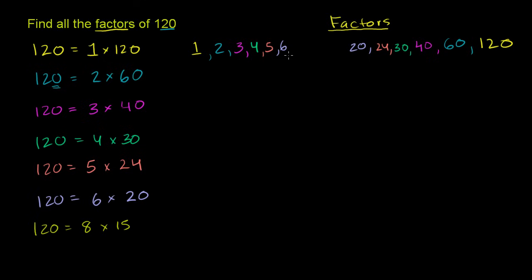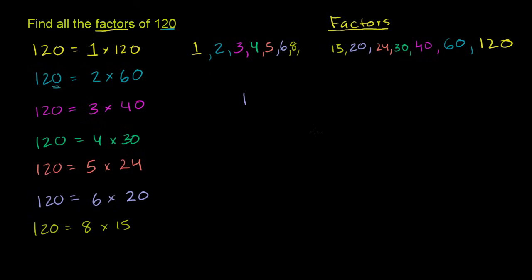So let's add that to our factor list — we now have 8 and 15. Now, is 120 divisible by 9? To test that, you add up the digits: 1 plus 2 plus 0 equals 3. That satisfies our divisibility rule for 3, but 3 is not divisible by 9, so 120 will not be divisible by 9. So 9 does not work out.